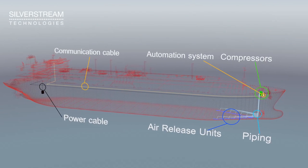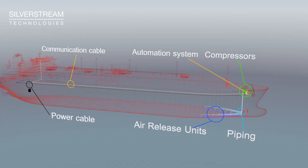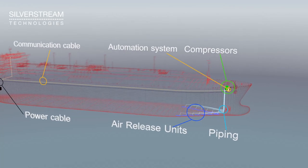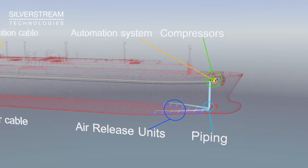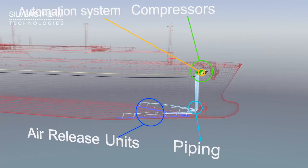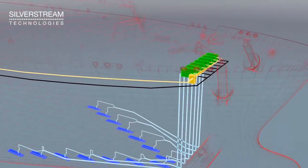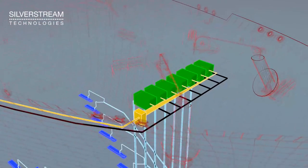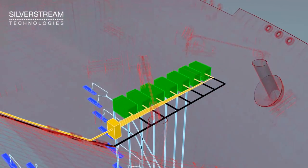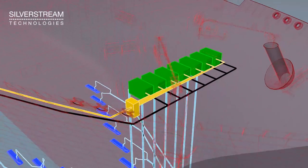The Silverstream system consists of air release units, compressors, an automation system, piping and cables. The Silverstream system is approved by classification societies and uses durable oil-free compressors.